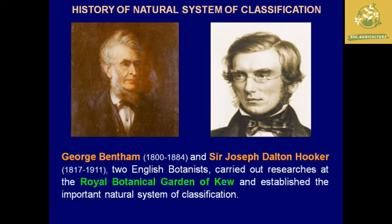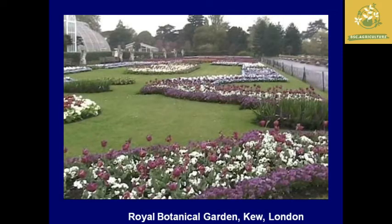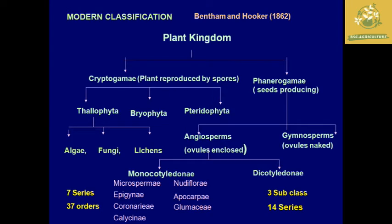Now we are going to see about the history of the Bentham and Hooker system of classification. These are pictures of George Bentham and Sir Joseph Dalton Hooker — two English botanists who carried out research at the Royal Botanical Garden of Kew in London. They established the importance of the natural system of classification and overcame the artificial system of classification.